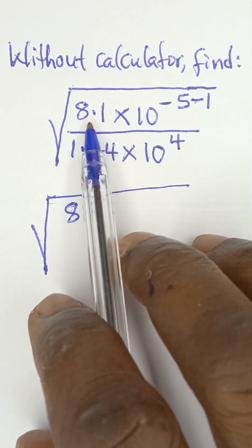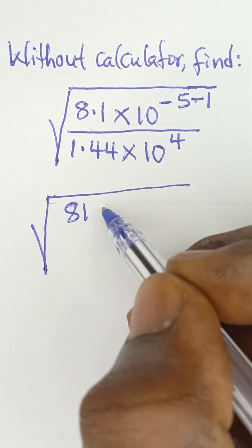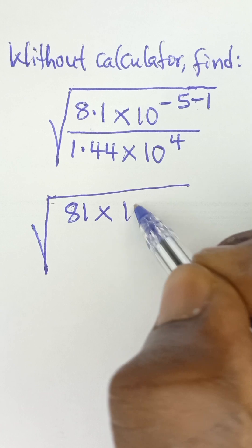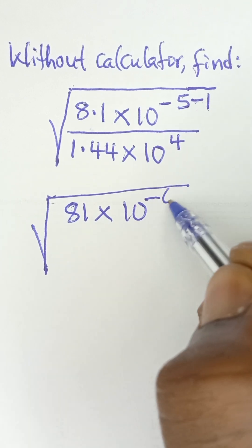So anytime you move a decimal point to the right once, you subtract 1 from that power. So it becomes 81 multiplied by 10 raised to the power negative 5 minus 1, which is negative 6.